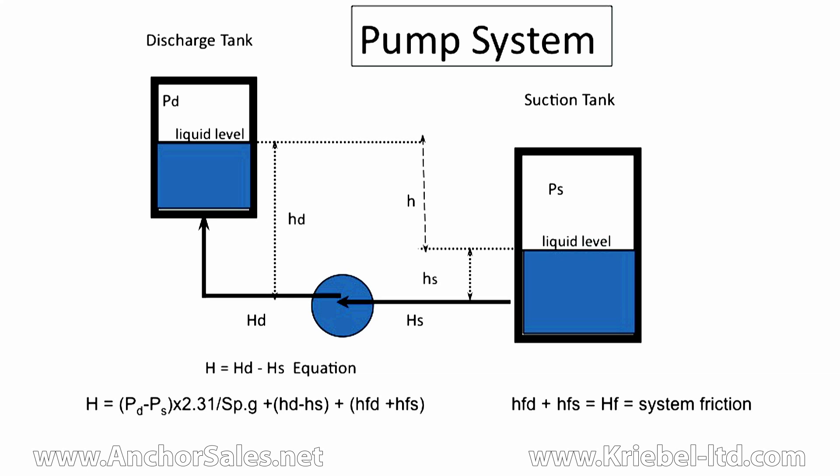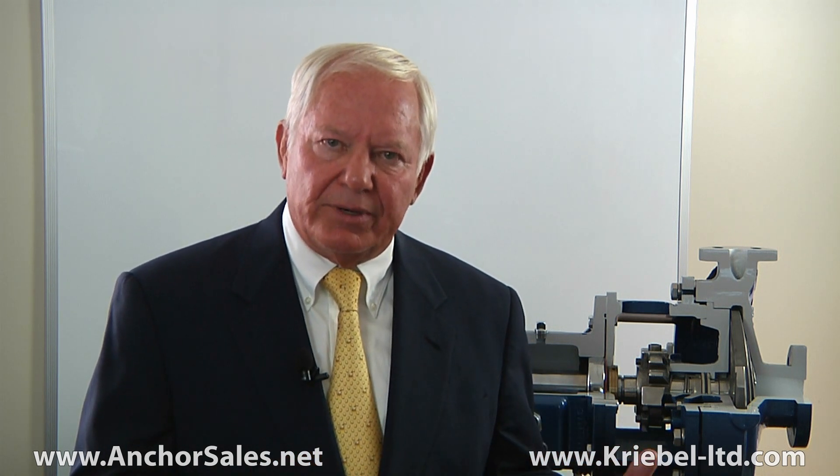The elevation head is determined by measuring the discharge elevation and subtracting the suction elevation from it. That's the elevation head. To that, you have to add the friction head. This is the loss in pressure due to liquid flowing through the pump system — losses due to friction against the pipe, fittings, and other process equipment such as heat exchangers and valves.